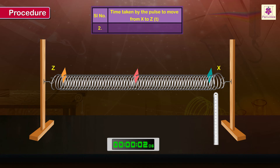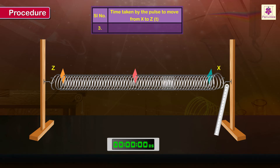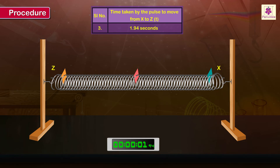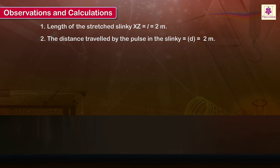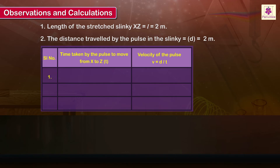Repeat the earlier steps two more times to obtain at least three readings of the time interval. Length of the stretched slinky xz is equal to L = 2 meters. The distance travelled by the pulse in the slinky is equal to d = 2 meters. Time taken by the pulse to move from x to z is 1.92 seconds. Velocity of the pulse v is equal to d divided by t.